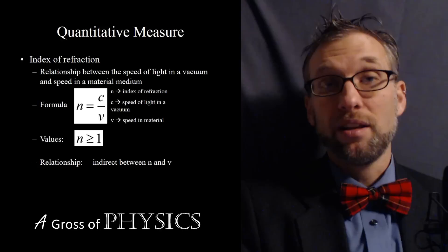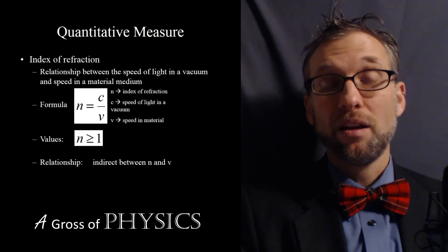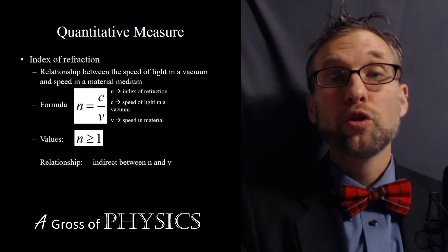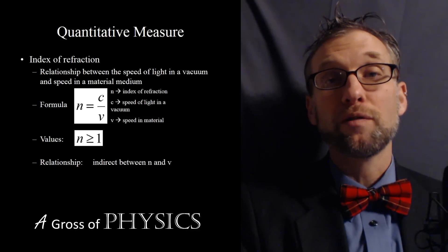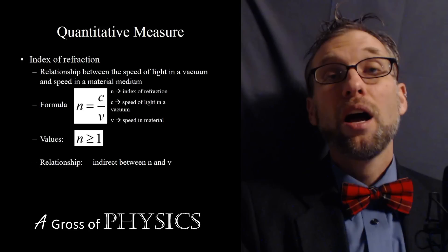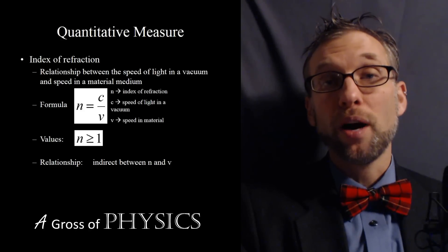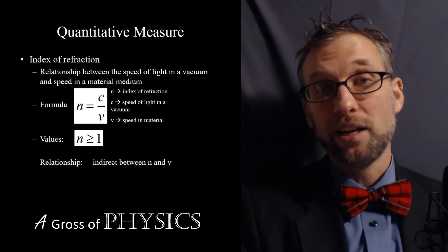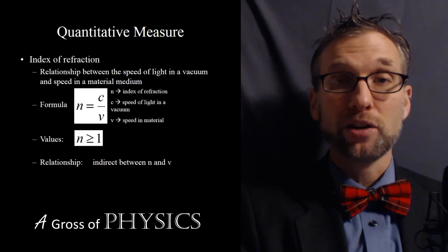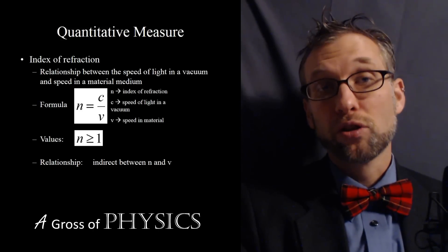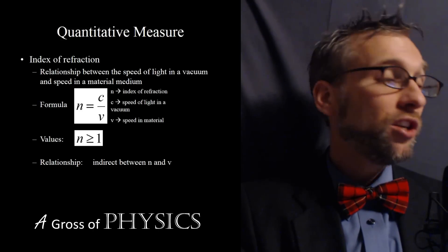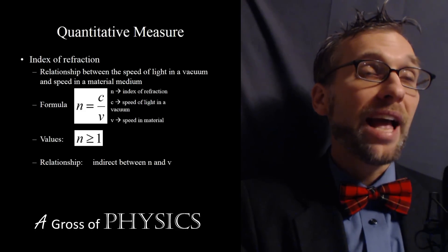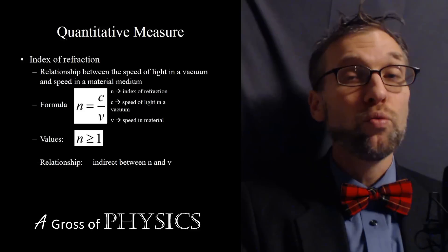That's when an object travels in a vacuum. If it travels in a more dense material, it will slow down. The speed will always be smaller for V than it is for C in any other material. As V goes down, the index of refraction will go up because C is a constant. There's an indirect relationship between the speed of light in the material and the index of refraction. Bigger indices of refraction mean slower speeds. Any value for N is going to be greater than or equal to 1.